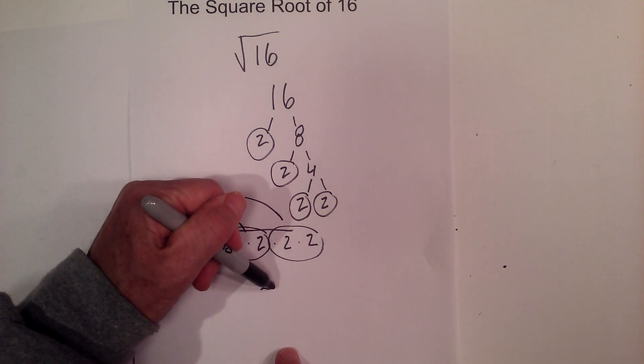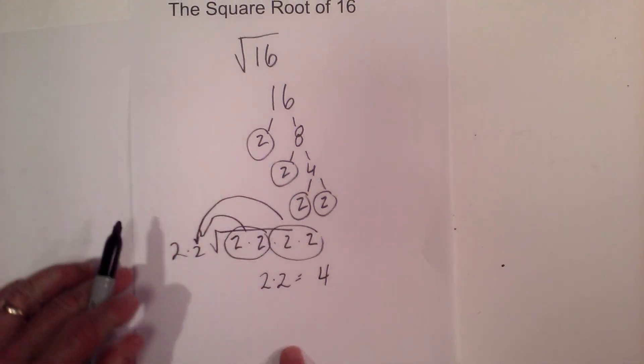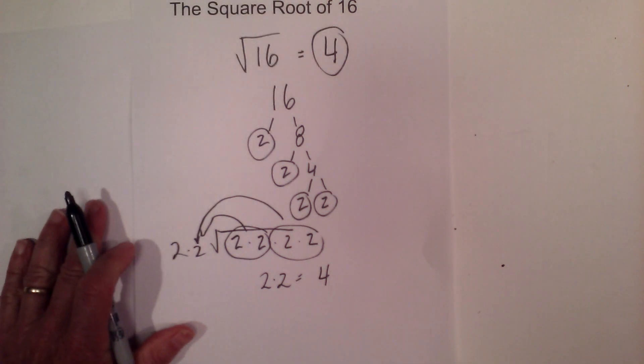So now we have 2 times 2 which is equal to 4. So the square root of 16 equals 4.